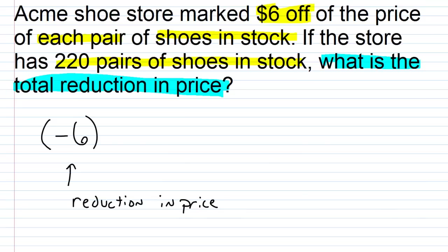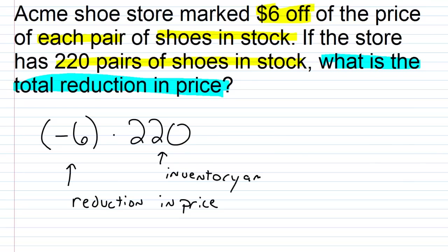The store has 220 pairs of shoes in stock. If I multiply the reduction in price for each pair of shoes times the total number of pairs of shoes — times 220, the inventory amount — it gives me the total reduction in price. Because the store is marking $6 off each pair and has 220 total pairs, I simply multiply negative 6 by 220 to get the total reduction in price.